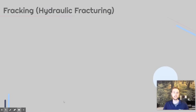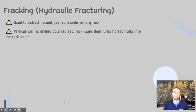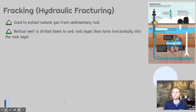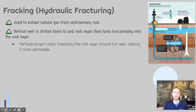Next, we'll talk about a natural gas extraction method called fracking, or hydraulic fracturing. It's basically a method for extracting natural gas from sedimentary rock that's difficult to reach with traditional extraction. A vertical well is drilled down into the sedimentary rock, then turns horizontally through the rock layer. A perforating gun is sent out to crack little holes in the rock layer to increase permeability. Then fracking fluid — a mixture of water, salt, detergents, and acids — is pumped into the ground at really high pressures, fracturing the rock further and increasing the flow of natural gas.